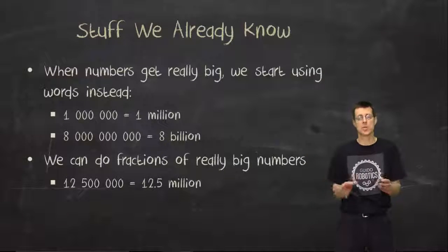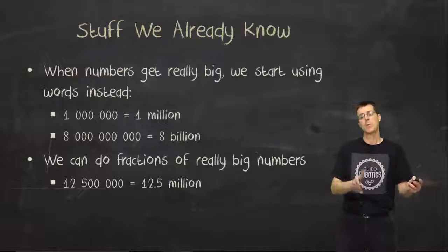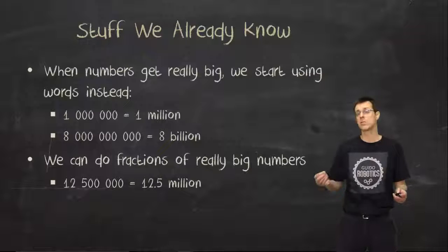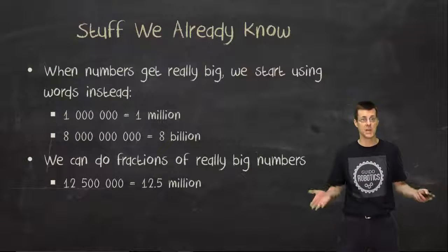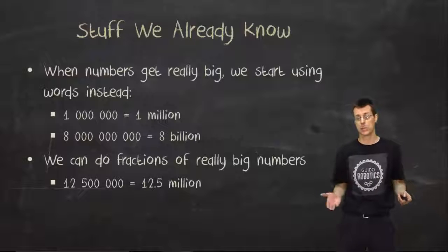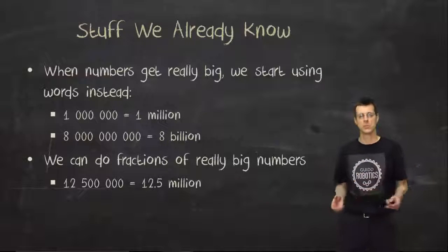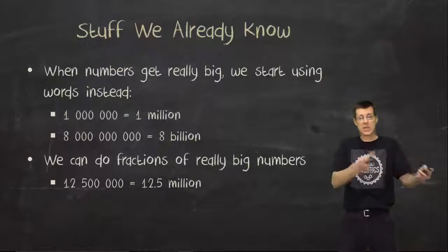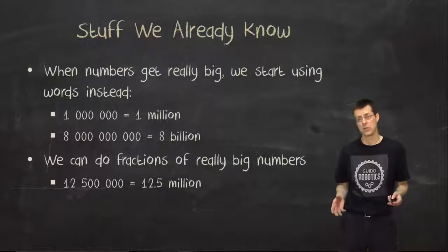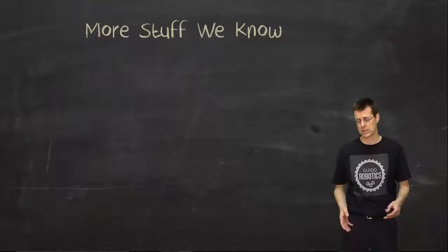You already know this: when we get to really, really large numbers, we stop using all the zeros and we start using words. And we have that with smaller numbers too. For example, dozen. If I said dozen, you know exactly what I mean. It means 12. It's a word that has been turned into a number. And then we get into millions and billions and so on. And then we can have pieces and parts of those really big numbers, like 2.3 million or 2.4 billion.